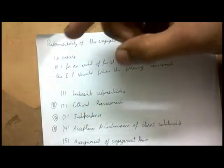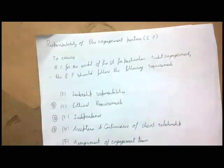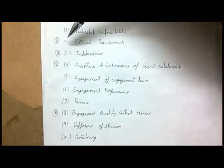Now we move to the major portion of the standard: the responsibility of the engagement partner. The standard is divided into two parts — the responsibility of the auditor and the responsibility of the EQCR. To ensure quality control for an audit of financial statements for a particular engagement, the engagement partner must follow certain requirements.